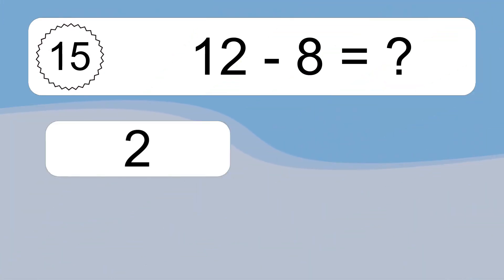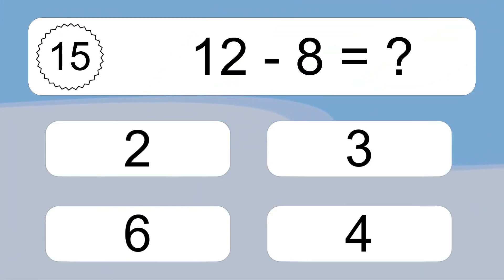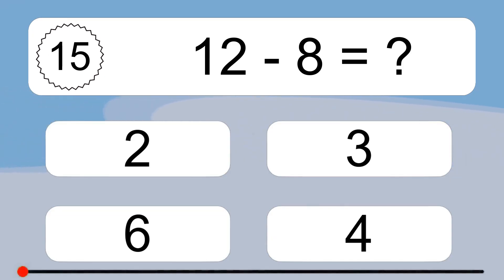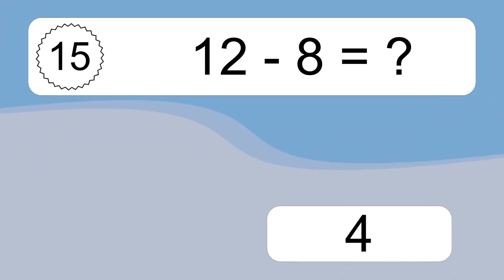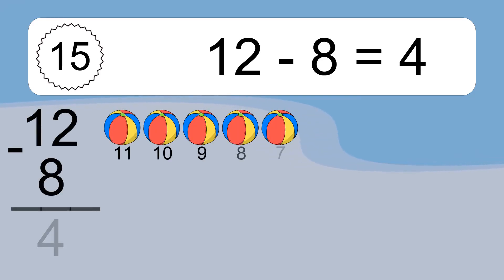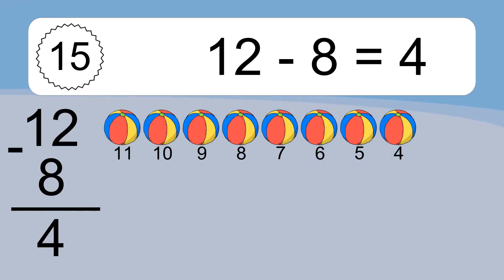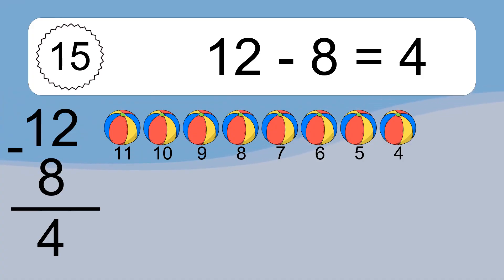12 minus 8 equals what? 12 minus 8 equals 4. Let's count it. 11, 10, 9, 8, 7, 6, 5, 4.